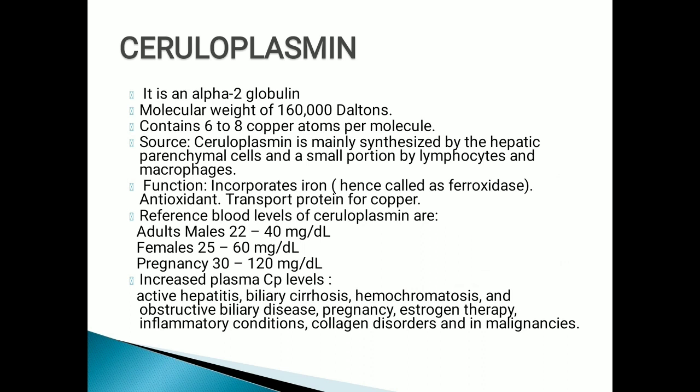Reference blood levels of ceruloplasmin: in males it is 22 to 40 mg/dL; in females it is 25 to 60 mg/dL; in pregnancy it is 30 to 120 mg/dL. Increased ceruloplasmin levels occur in active hepatitis, biliary cirrhosis, hemochromatosis, obstructive biliary disease, pregnancy, estrogen therapy, inflammatory conditions, collagen disorders, and malignancy.